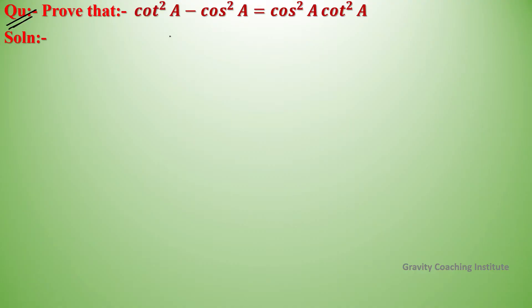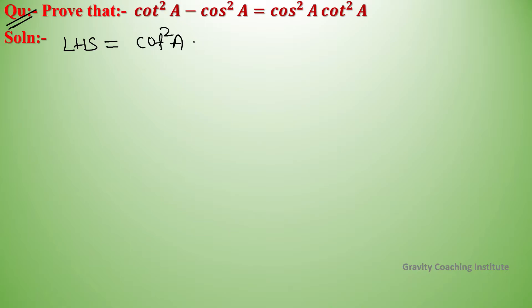Prove that cot squared a minus cos squared a equals cos squared a into cot squared a. Here, LHS is equal to cot squared a minus cos squared a.